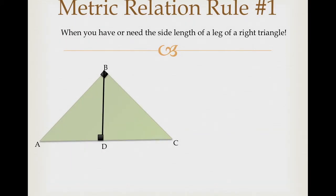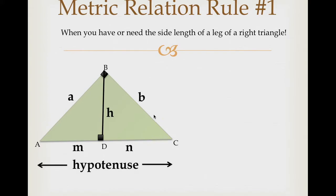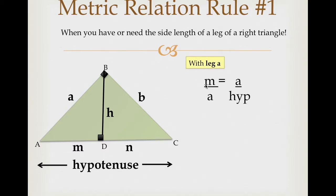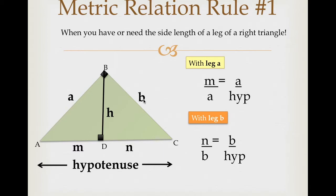Here's the first rule. This is the rule you use whenever you have or you need the legs — it deals strictly with the legs. Relabeling: legs are A and B, the hypotenuse is the full length, one side of the hypotenuse is M, the other is N. Using these letters, with leg A: M over A is equal to A over the hypotenuse. If you're focusing on leg B: N over B is equal to B over the hypotenuse.